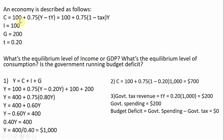The consumption function equals 100 plus 0.75. 0.75 is the marginal propensity to consume, and that's going to be multiplied by disposable income. Disposable income is Y, or the income in the economy, minus the tax rate times the income. We could rewrite this consumption function as 100 plus 0.75 times (1 minus the tax) times Y. The tax rate is 20% or 0.2.